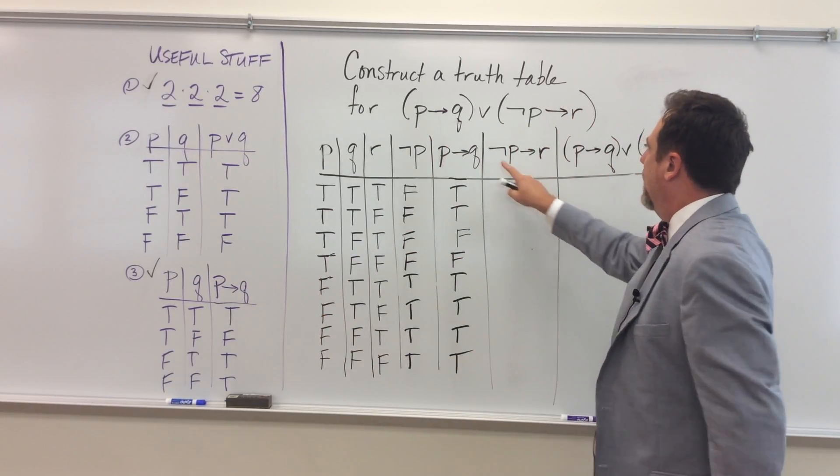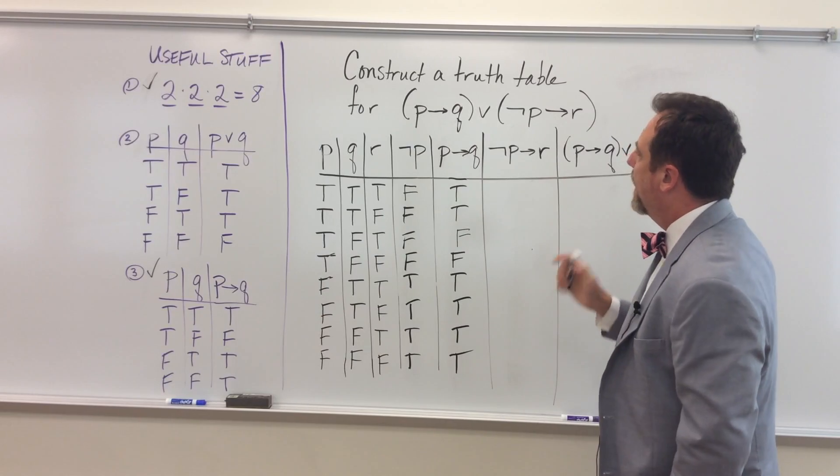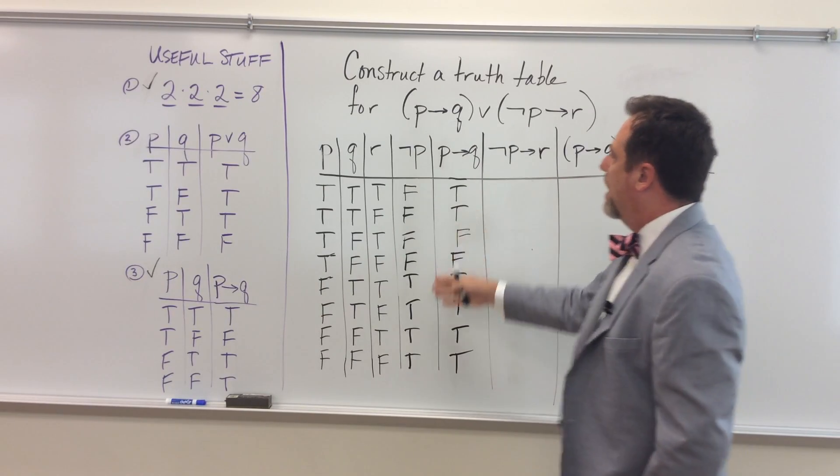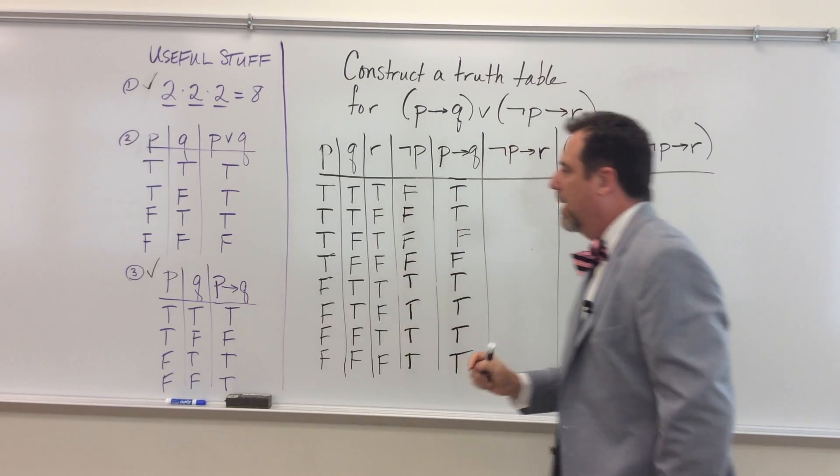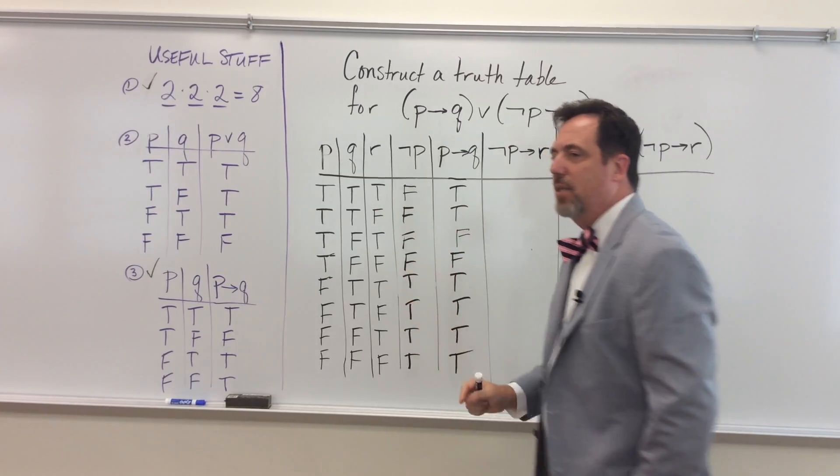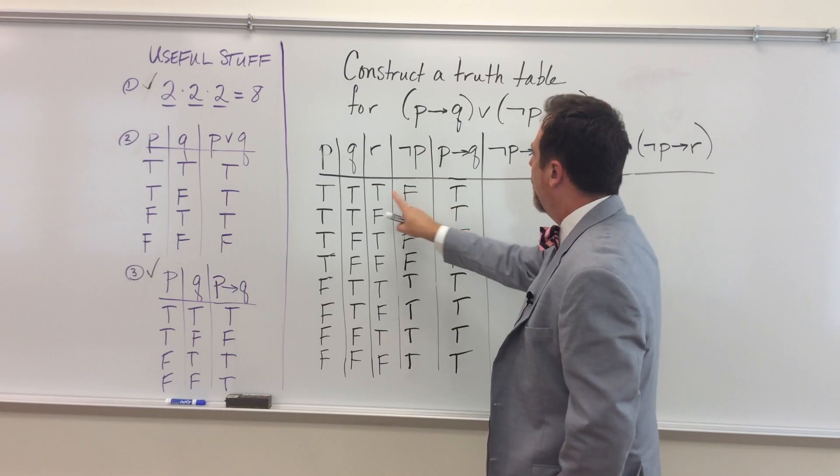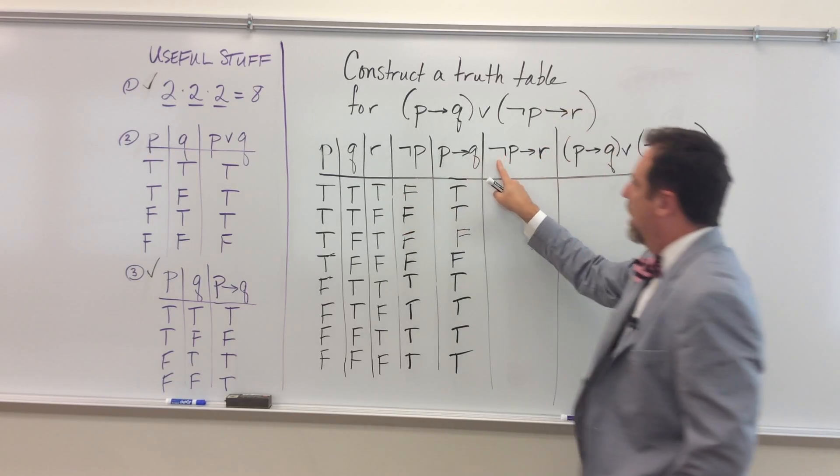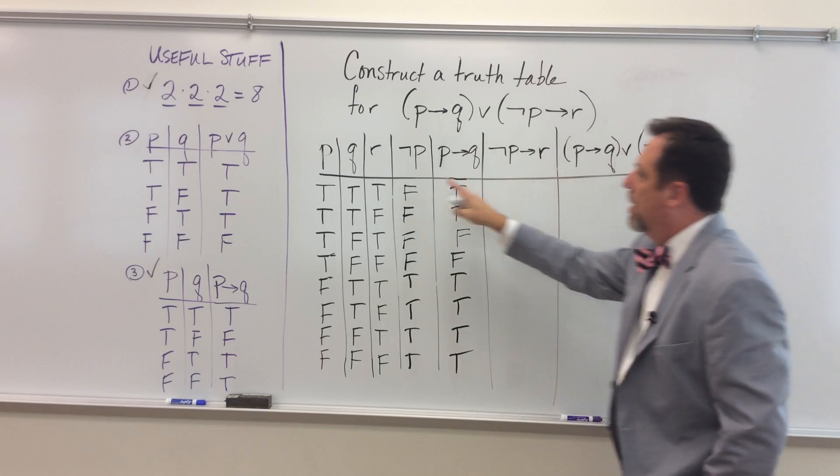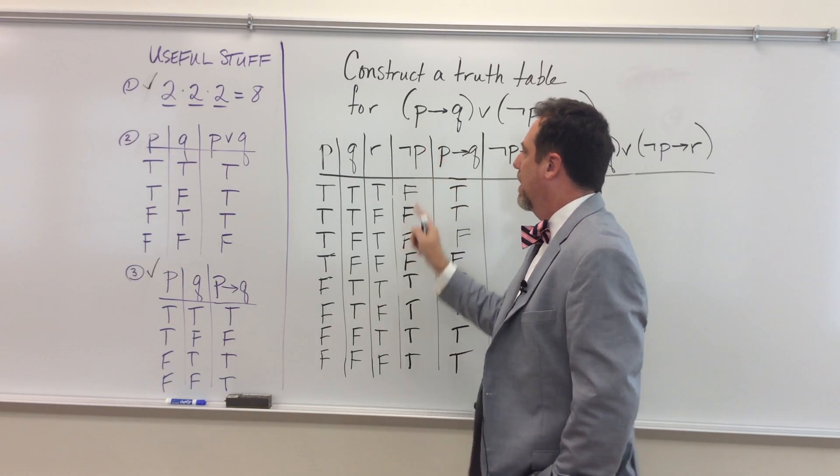Now I'm going to use the same conditional, but instead I've got not P implies R. In this case, the way I have them lined up, I'm going to have to read from left to right to find the true falses. True implies false. So here I have a false implies true. See, because it's not P implies R. So not P is on the right hand side here.